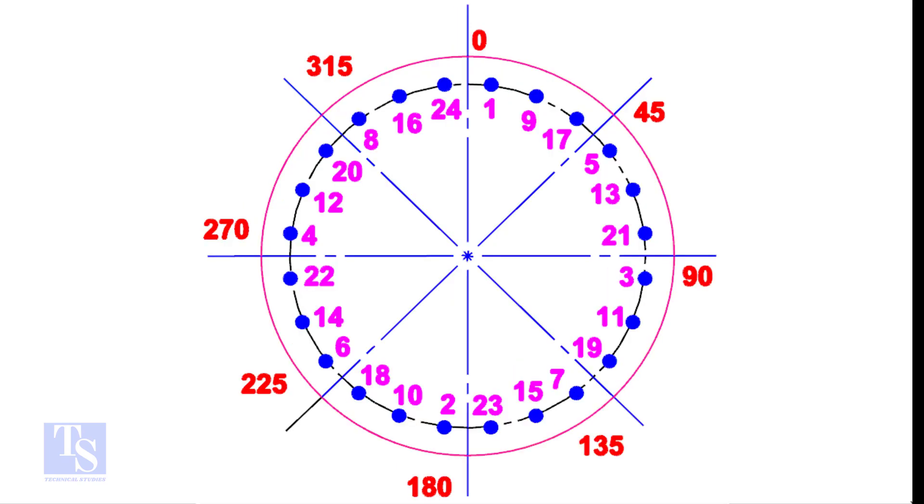For larger flanges, divide the bolts into 8 equal groups. Apply the same method. The difference between the two nearest holes will be 8.